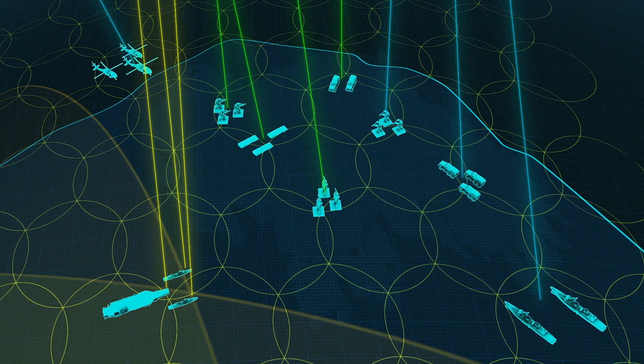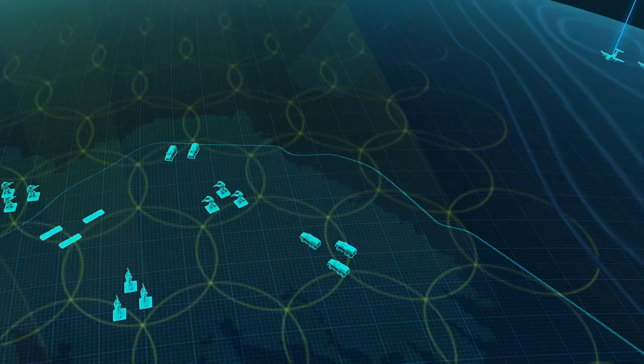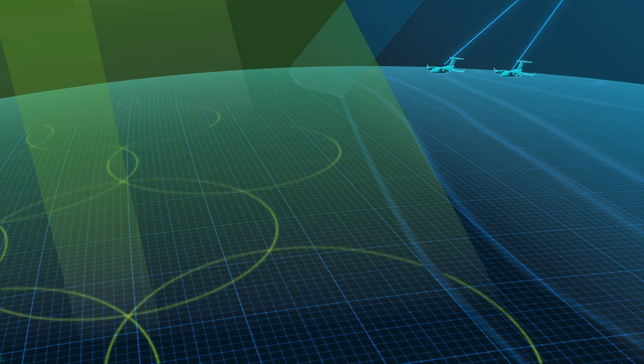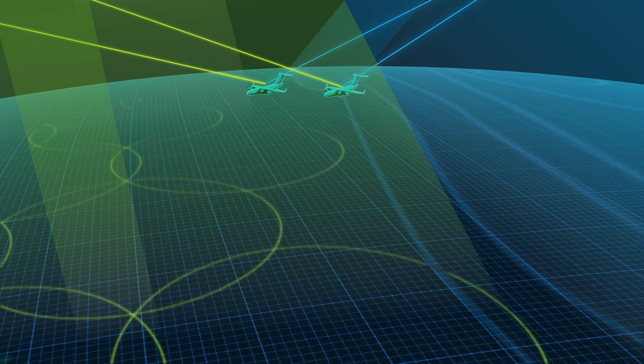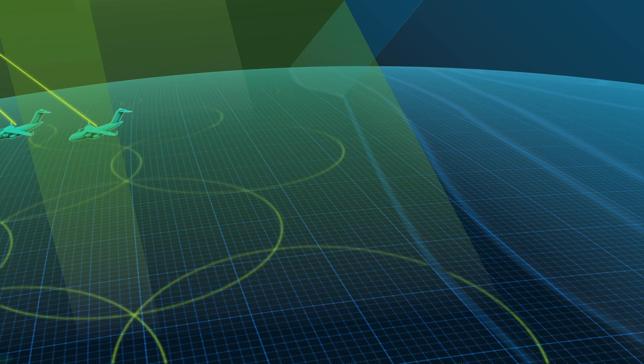As approaching forces move in and out of satellite coverage areas, the HAN keeps users connected across different beams and between different types of satellites.